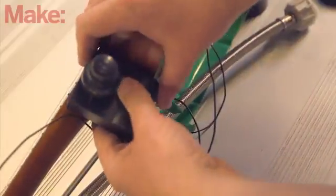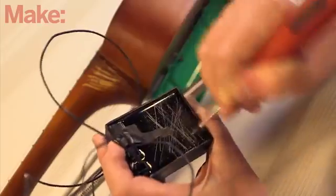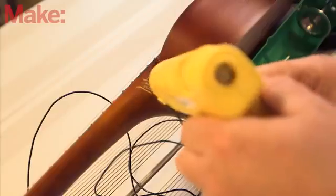Find a place on the ukulele where you want to mount the igniter trigger. Scratch away the finish on the ukulele and on the igniter and mount it into place with hot glue.